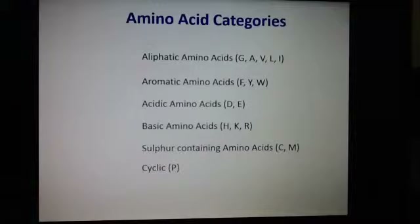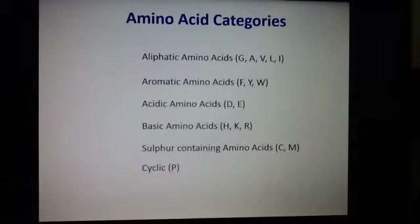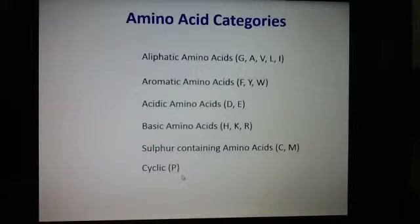The acidic amino acids fall on the lower end of the pK scale, and oppositely, the basic amino acids are on the higher end of the pK scale. Then there are those that contain sulfur, and the cyclic amino acid categories, which are important because they can determine the particular function of the amino acid — how it folds and how it functions within the cell.